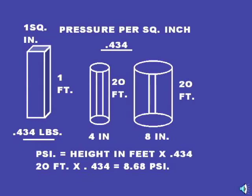Pressure per square inch. A column of water one foot high, one square inch, equals .434 pounds.